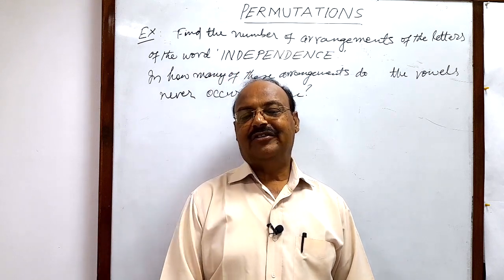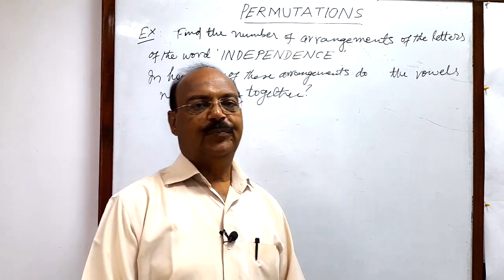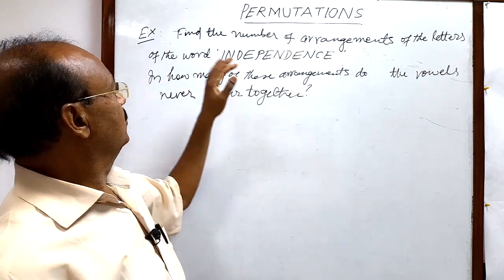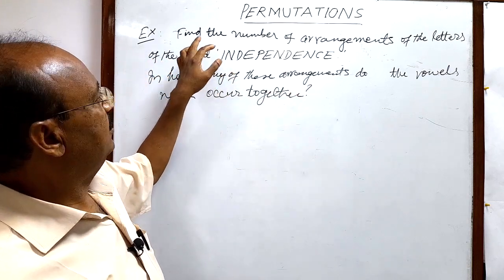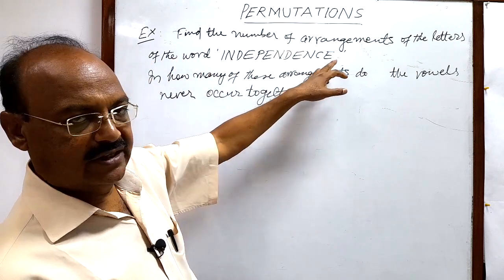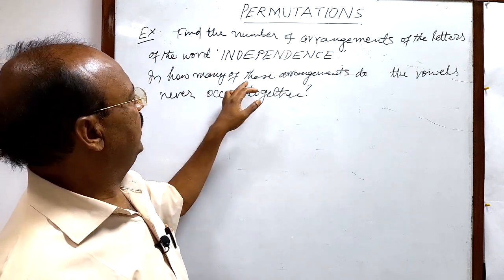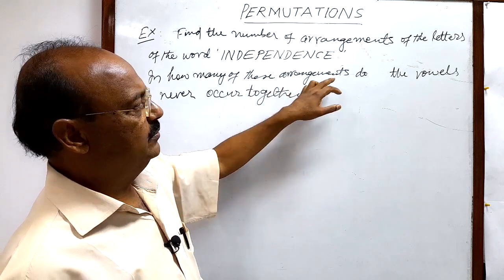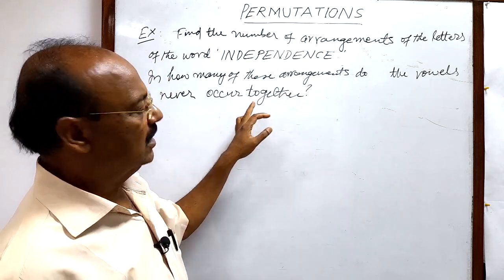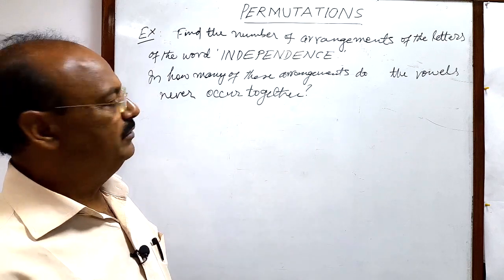Welcome students. Let us see a very interesting question from the topic permutations. The question has been given in two parts. First part: find the number of arrangements of the letters of the word INDEPENDENCE. Second part: in how many of these arrangements do the vowels never occur together?